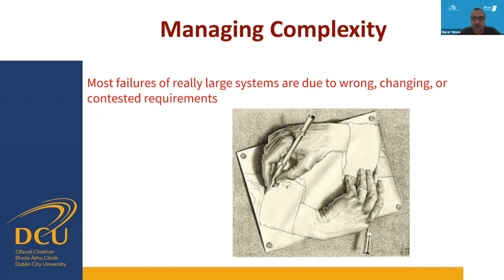At a micro level, bugs arise in protocols because they're hard to understand, and as the program gets bigger and interactions between components grow, complexity arises. As software is a socio-technical system, we can't always predict reactions to new functionality. Most failures of large systems are due to wrong, changing, or overlapping and contested requirements — where several stakeholders have different vested interests. One stakeholder may prioritize security while another focuses on functionality or performance.